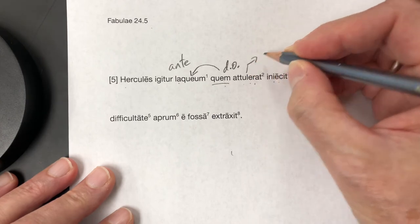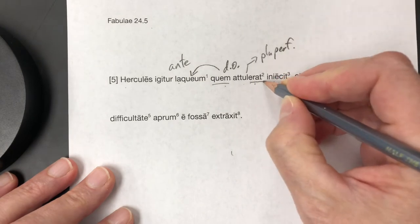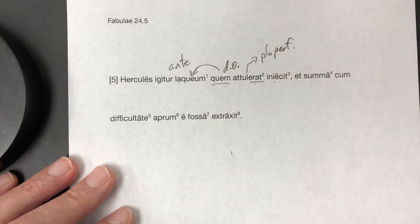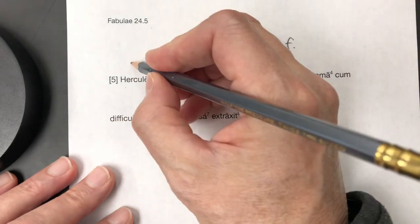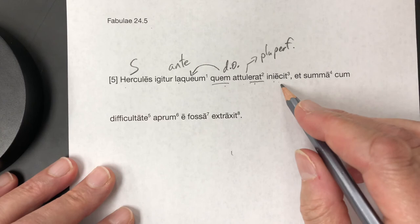Atulerat, well that's a pluperfect passive. You can see the erat there of afero, a very irregular verb there. And Hercules is the subject of iniekit. Hercules iniekit.